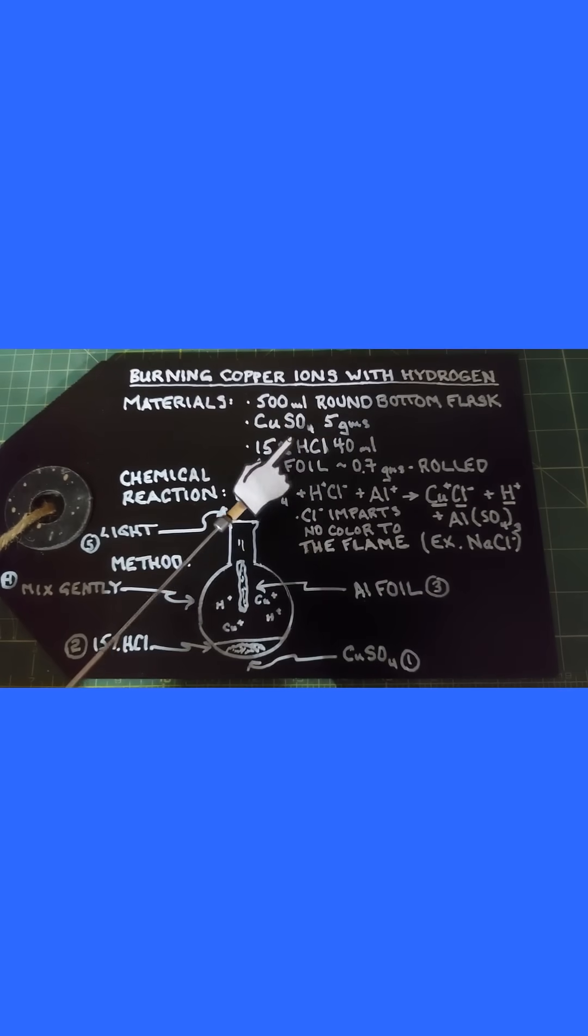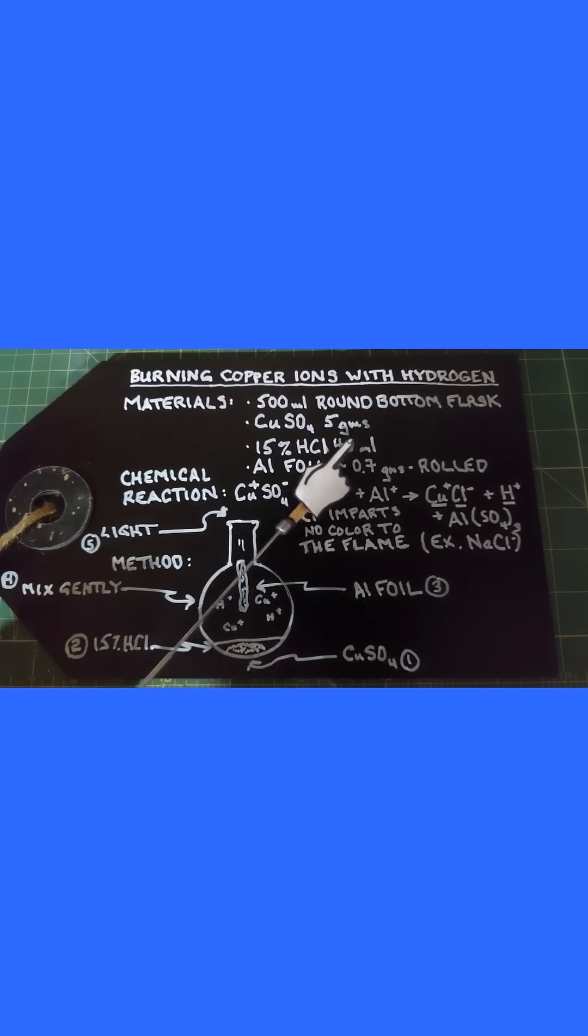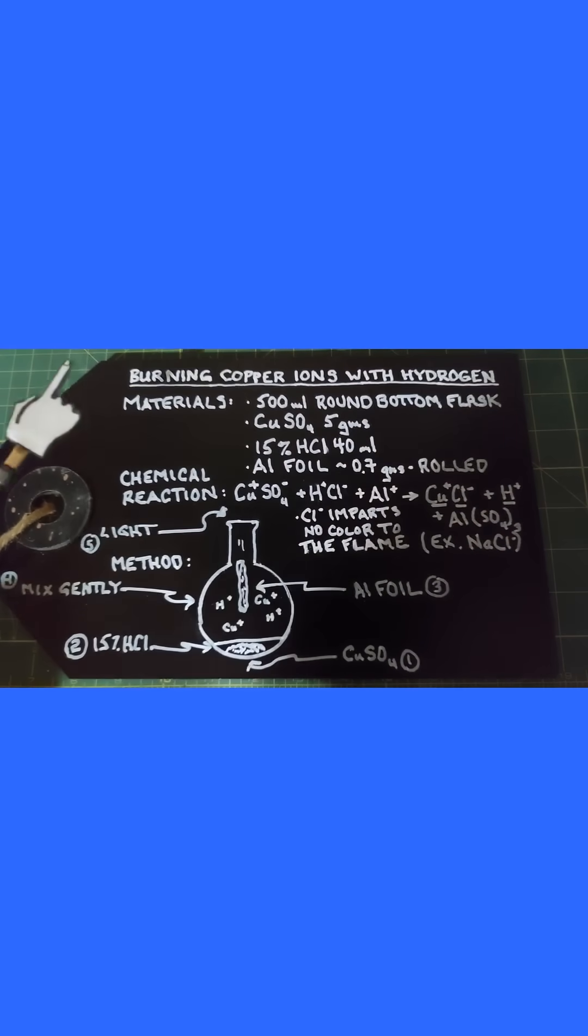We need a 15% hydrochloric acid solution, 40 milliliters, and we need some aluminum foil around 0.6 to 0.7 grams that's rolled. What I mean by rolled is like this, so you can stick it in the top of that round bottom flask.